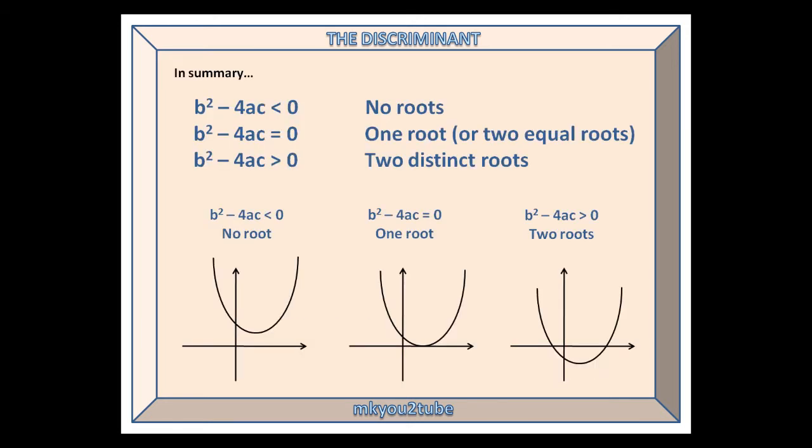In summary, if b squared minus 4ac is less than 0, there are no roots. If it equals 0, there is one root, or alternatively two equal roots. And if it is greater than 0, then there are two distinct roots. The graphs representing no roots, one root, and two roots are shown below.